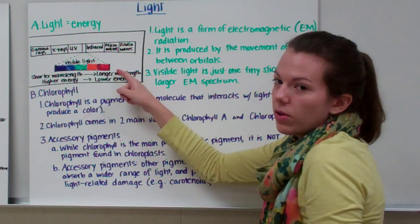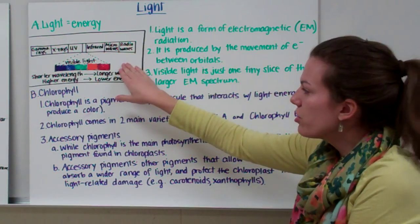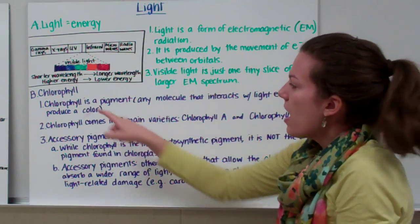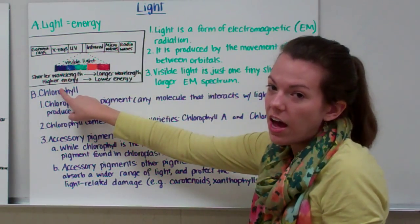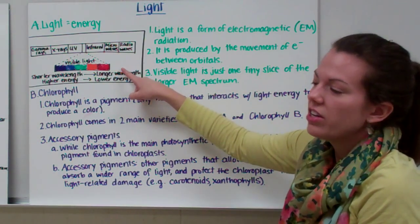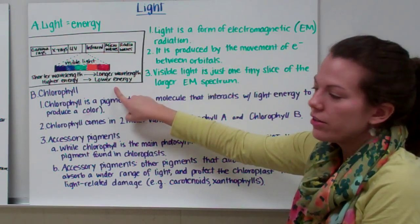If we zoom into our visible light, we'll see we have different colors. And it turns out that the shorter wavelength, which are like our purples and our blues, have a lot of energy. They're very high energy. And then our longer wavelengths, which are like our reds, our oranges, and our yellows, are lower in energy.